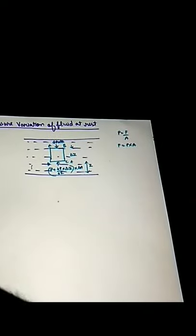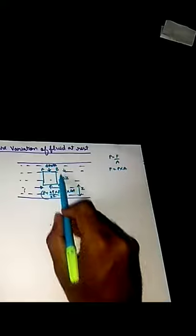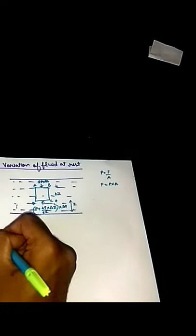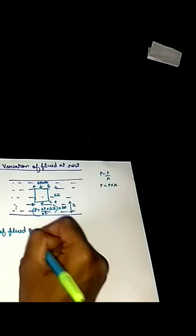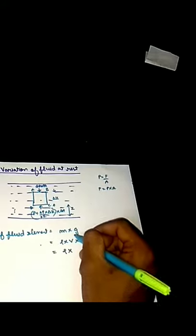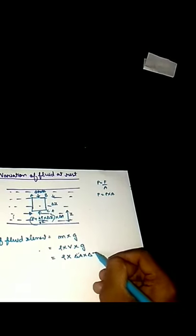Now we are going to prove this equation. We know the force on AB as well as the force on DC. We also need to consider the weight of the fluid element. Weight is mass into g, where mass equals density into volume. So weight equals rho into delta A into delta z into g.